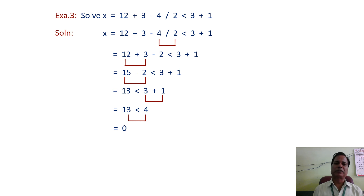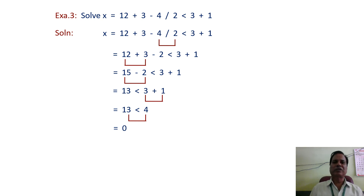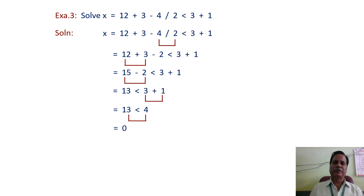We have seen three examples solved using the rules of precedence and associativity. With this lecture, you should now have a clear understanding of precedence and associativity and how they are applied to solve expressions for the correct result. We end our class at this point.